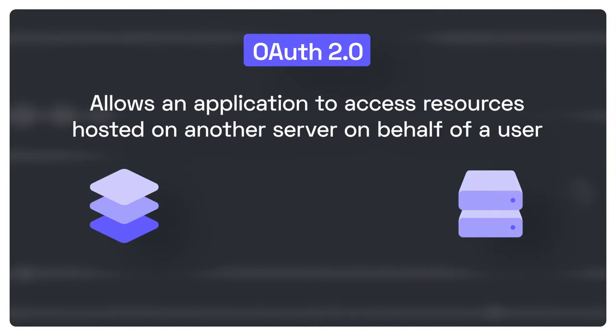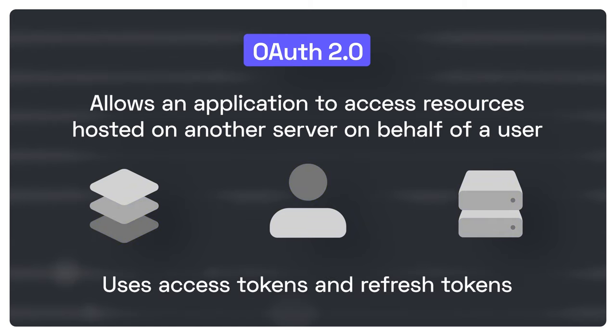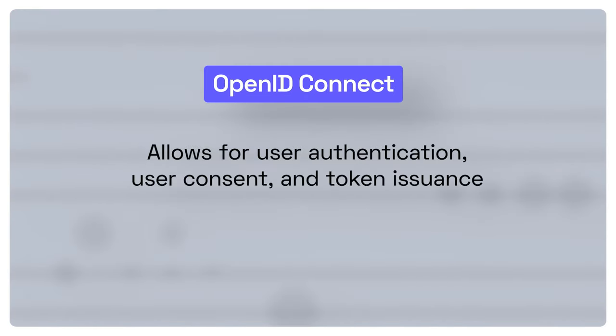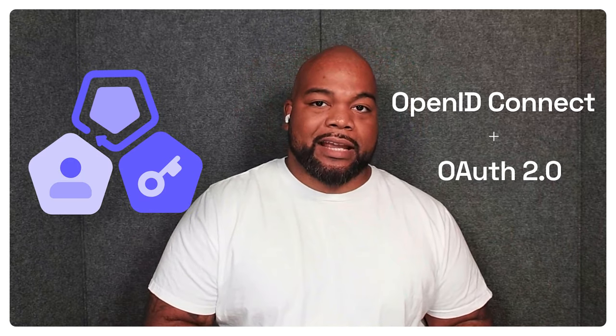We use OAuth 2.0 for authorization and OpenID Connect for authentication. OAuth 2.0 allows an application to access resources hosted on another server on behalf of the user, and it uses access tokens and refresh tokens. OpenID Connect allows for user authentication, user consent, and token issuance, and it uses ID tokens. Let's talk about the three types of tokens used with OpenID Connect and OAuth 2.0.